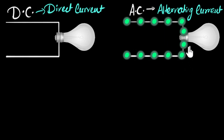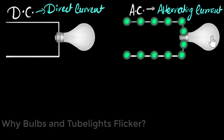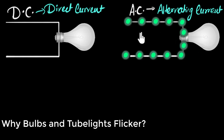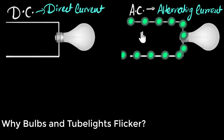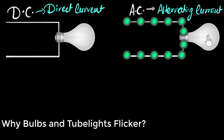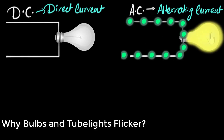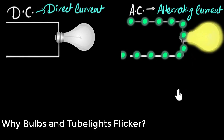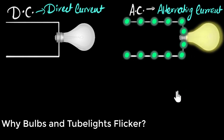And when the current goes to zero, the filament over here cools down a little bit. And when the filament cools down a little bit, the bulb dims a little bit. Why doesn't the bulb completely switch off when the current goes to zero? Well, that's because the current comes back up very quickly — it stops only for a fraction of a second. So during that fraction, the bulb cools down just a little bit, and then again heats up, cools down and heats up. And that's why we see the bulb flickering.